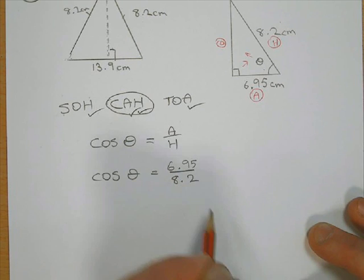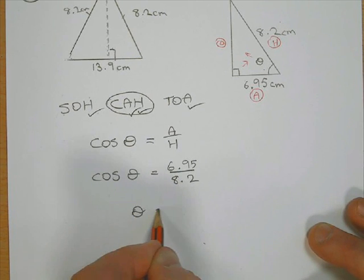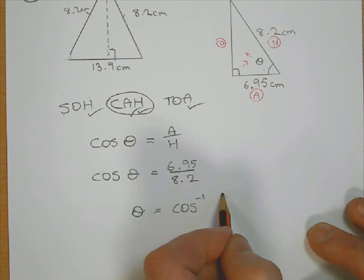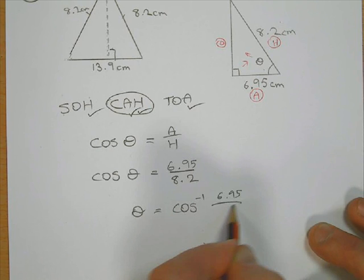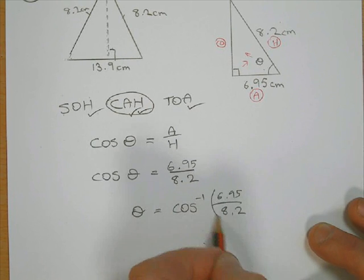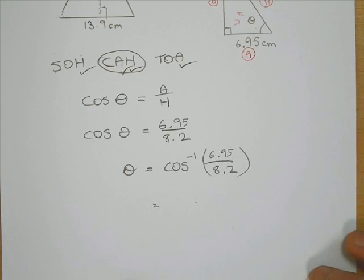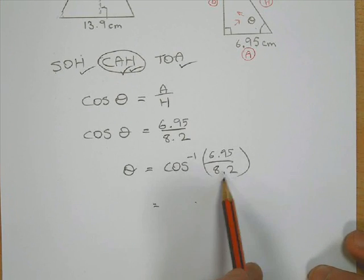And then to work out what the angle is, we have to use the inverse cos of 6.95 divided by 8.2. So you put that in brackets, just to make sure that it knows to divide first of all, and then do the inverse cos.